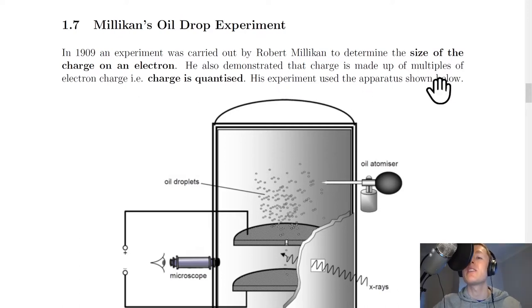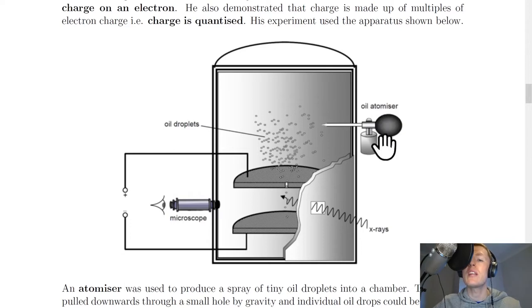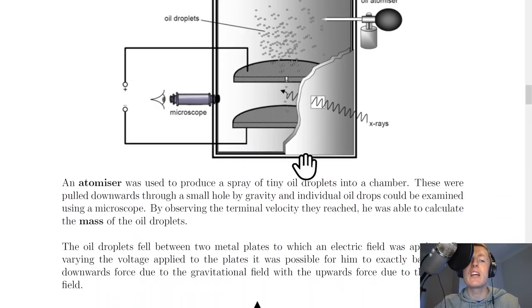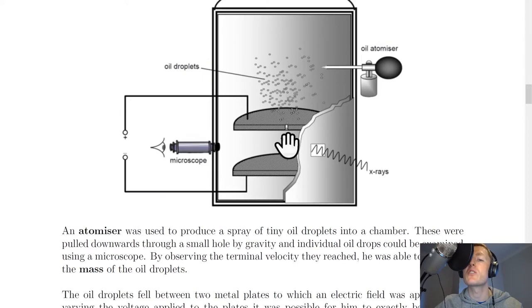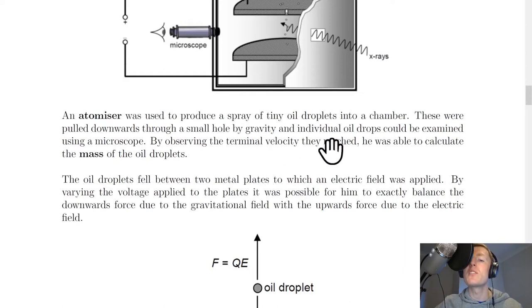His experiment used the apparatus shown below. You'll see we've got this oil atomizer on the right which sprays tiny oil droplets into this chamber. An atomizer was used to produce a spray of tiny oil droplets. These were pulled downwards through a small hole by gravity and individual oil drops could be examined using a microscope. By observing the terminal velocity they reached he was able to calculate the mass of the oil droplets.